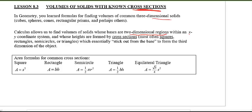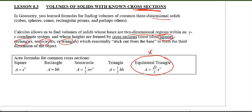Most often in calculus, those cross sections are formed by squares, rectangles, semicircles, or triangles, which stick out from the base to form the third dimension. I've given you formulas for common cross sections here: squares, rectangles, semicircle, and triangle. The equilateral triangle formula might be a little bit new or tricky, but you can prove that formula yourself — you may have done it in pre-calculus.